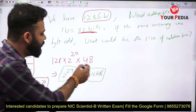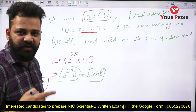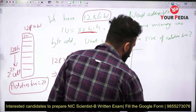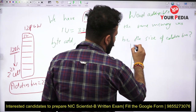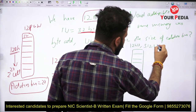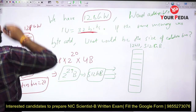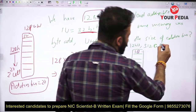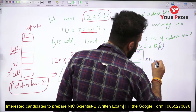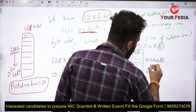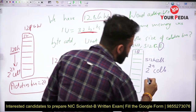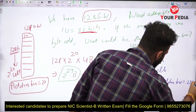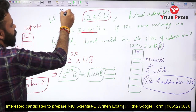Now writing this memory in byte addressable form: the memory is 512 GB and it is byte addressable, so cell size equals 1 byte. This means the number of cells is 512G cells, which equals 2²⁹ cells. This means the size of the address bus changes to 29 bits. Initially it was 27 bits, but the new answer is 29 bits, which was the correct option given in the exam.